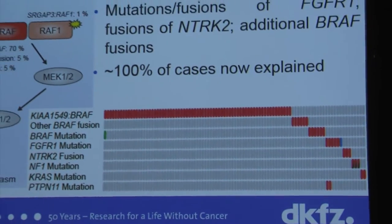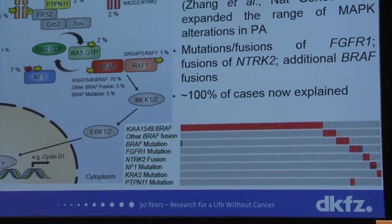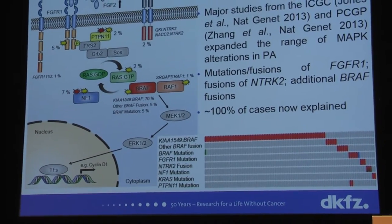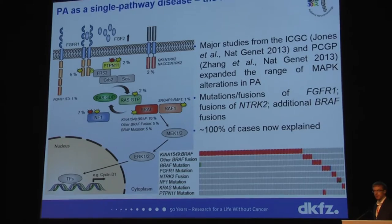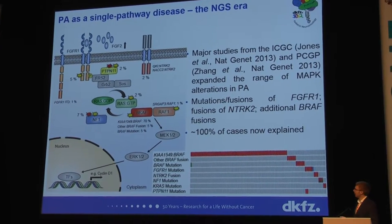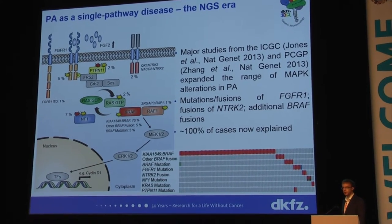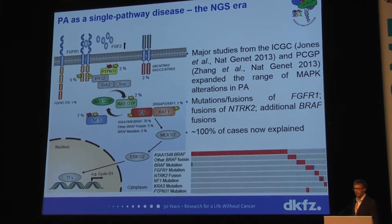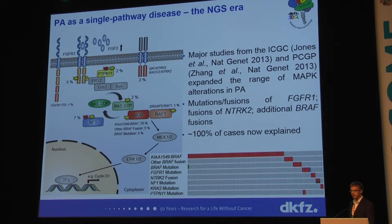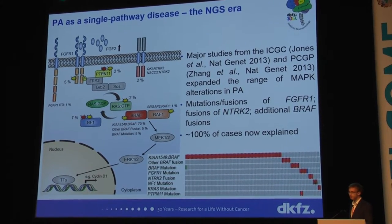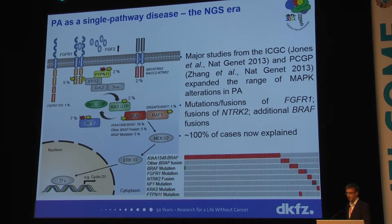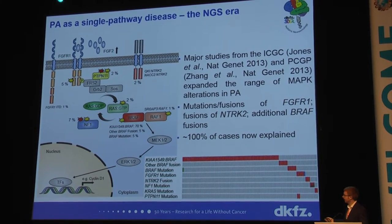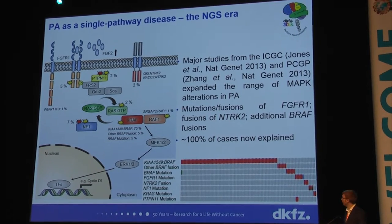We've now had several large next-generation sequencing-based studies coming through, and it's really made it clear that pretty much 100% of cases — again particularly for PA, but also for some of those other low-grade gliomas — can be explained by some kind of alteration in this signaling pathway. We've really expanded the breadth of alterations we're seeing, not just in the core RAS-RAF-NF1 part of the pathway, but extending upstream to other gene fusions, mutations, or small duplications of the kinase domain of FGFR1, for example.